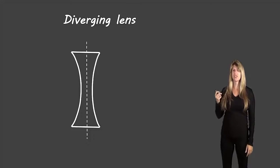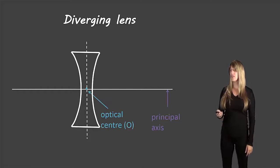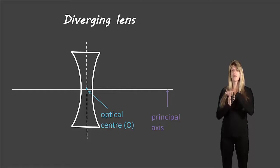So here's an example of a diverging lens and it has a normal going through top to bottom. If we draw a line perpendicular to that, so at right angles we have the principal axis. In the center where the principal axis and the normal meet is the optical center O.